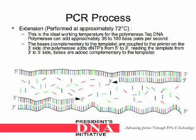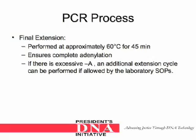Extension is performed at approximately 72 degrees Celsius, the ideal working temperature for the polymerase. Taq DNA polymerase can add approximately 35 to 100 base pairs per second. The bases are complementary to the template and coupled to the primer on the 3' side. The polymerase adds DNTPs from 5' to 3', reading the template from 3' to 5'. Final extension is performed at approximately 60 degrees Celsius for 45 minutes, and ensures complete adenylation. If there is excessive minus-A, an additional extension cycle can be performed if allowed by the laboratory's SOPs.